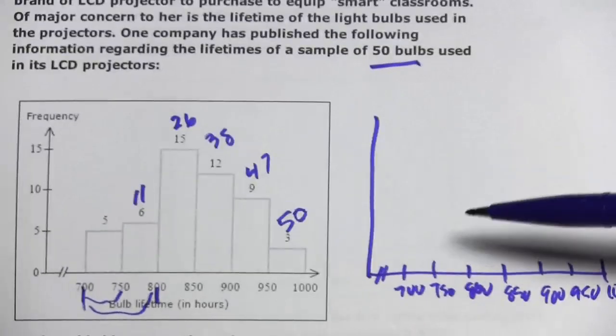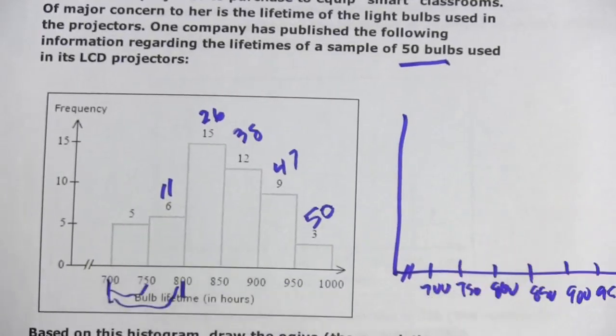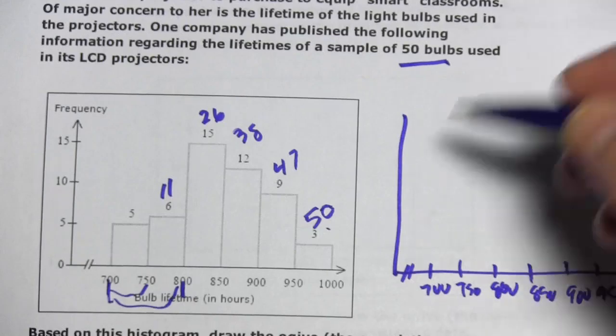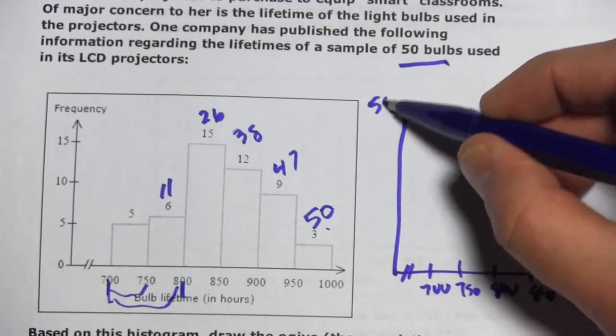The axis on the left is going to go from 0, which is where we start at 700, up to 50. So it's the total sample size. We'll put 50 up here. We'll say this is 25.